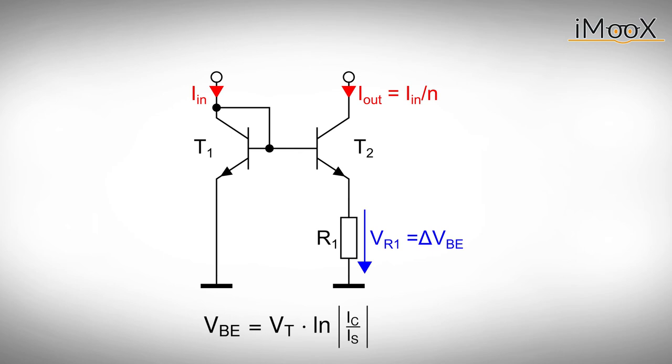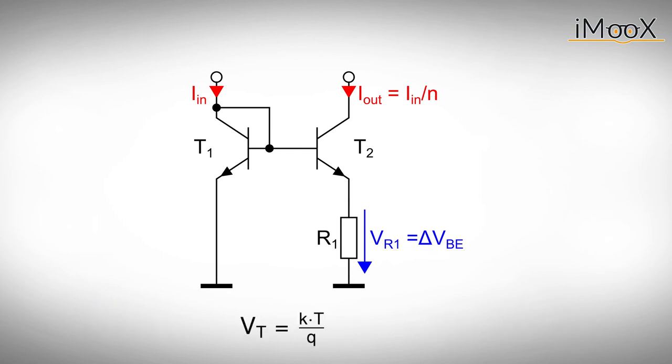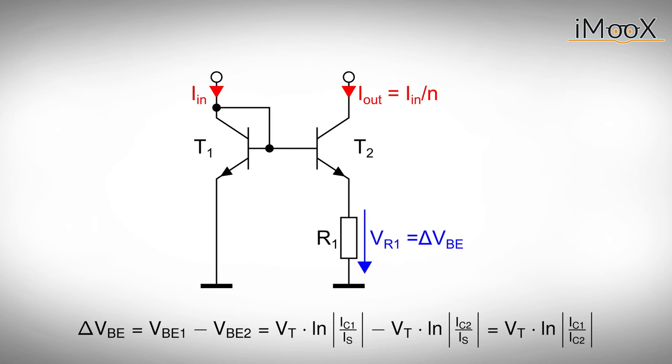The voltage drop over R1 is the difference between VBE1 and VBE2. Expressing the base emitter voltages by the currents and calculating the difference yields delta VBE, the voltage drop at R1. Delta VBE is proportional to the temperature voltage and thus to the temperature itself. By selecting a certain ratio IC1 over IC2 and one of the currents, we can determine the voltage delta VBE at the resistor. Note that due to R1 IC1 must be larger than IC2. The resistor itself is of course determined via Ohm's law.